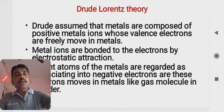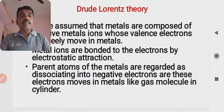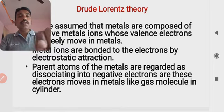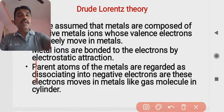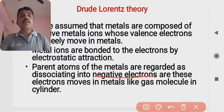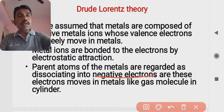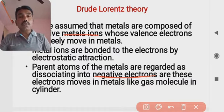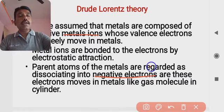Another part of the assumption is that the parent atoms of the metals are regarded as dissociating into negative electrons. These electrons move in the metal like gas molecules in a container. So the positive ions compose the metal, and the parent atoms are regarded as dissociating into free negative electrons.